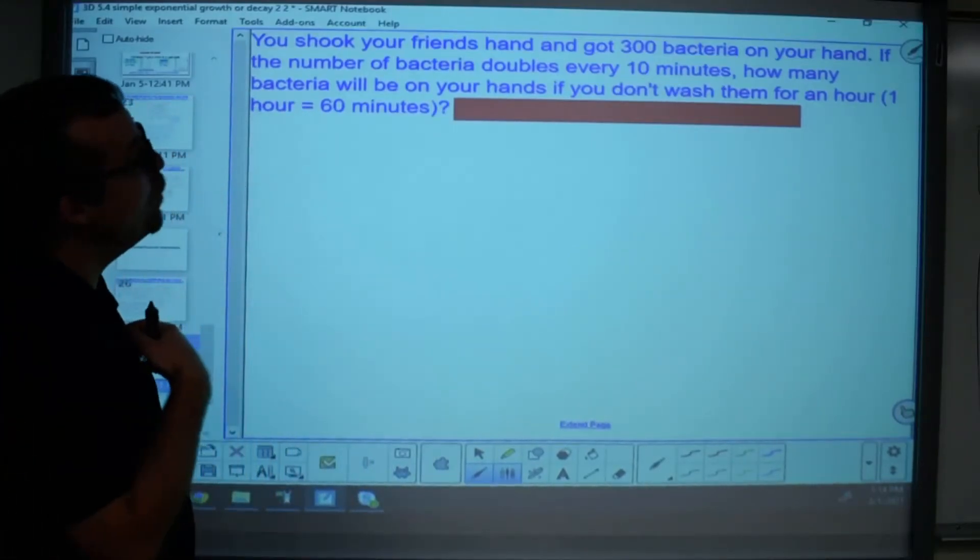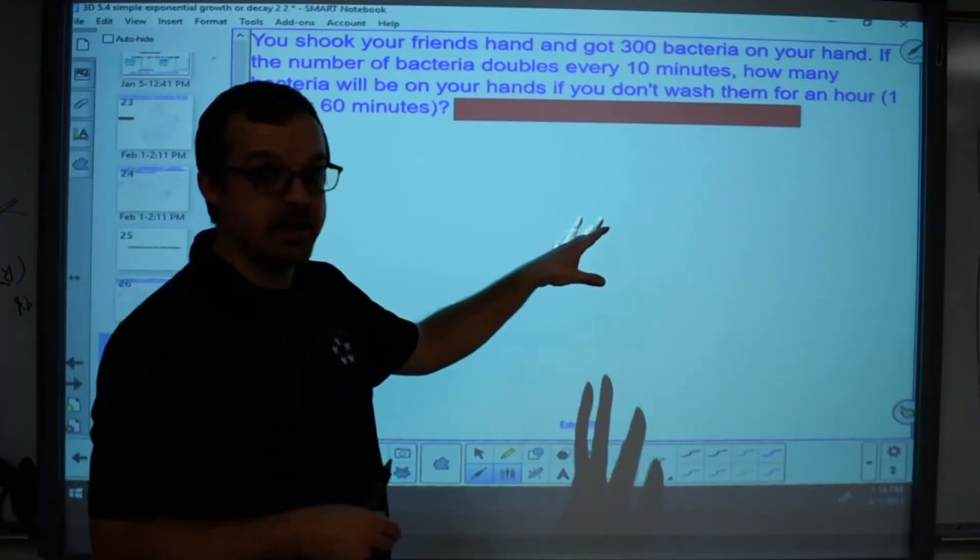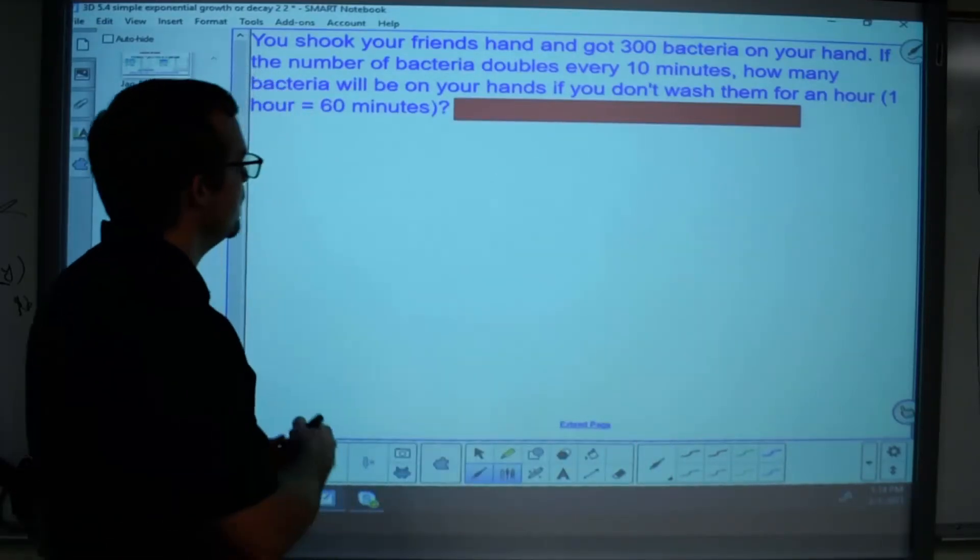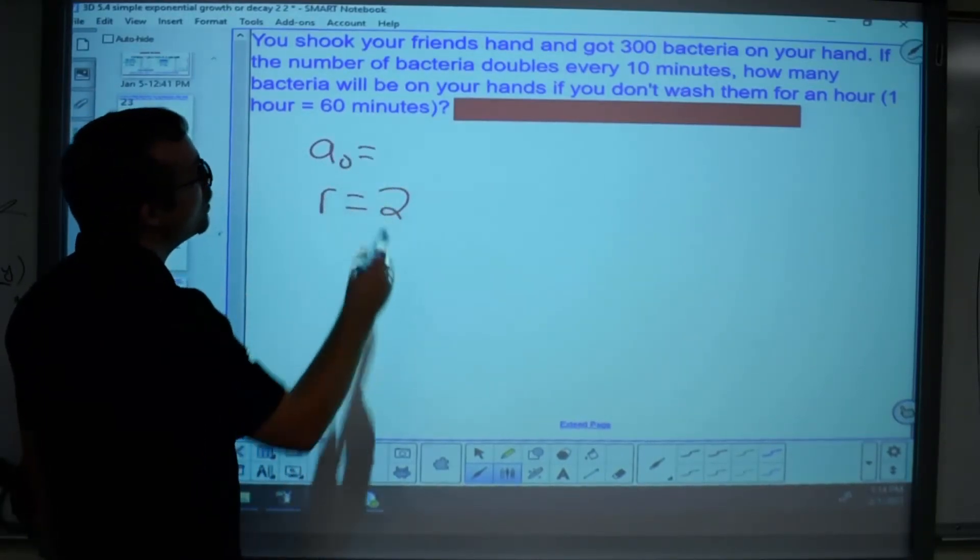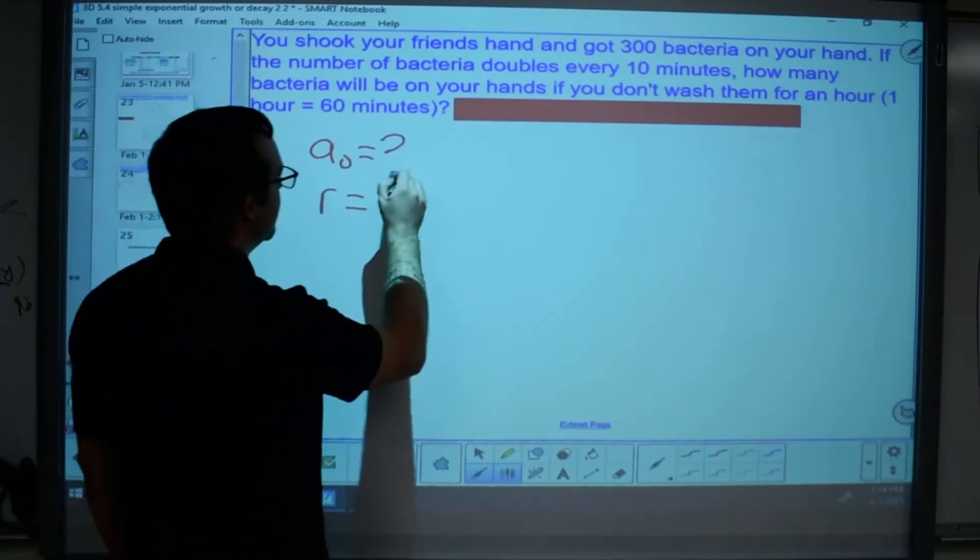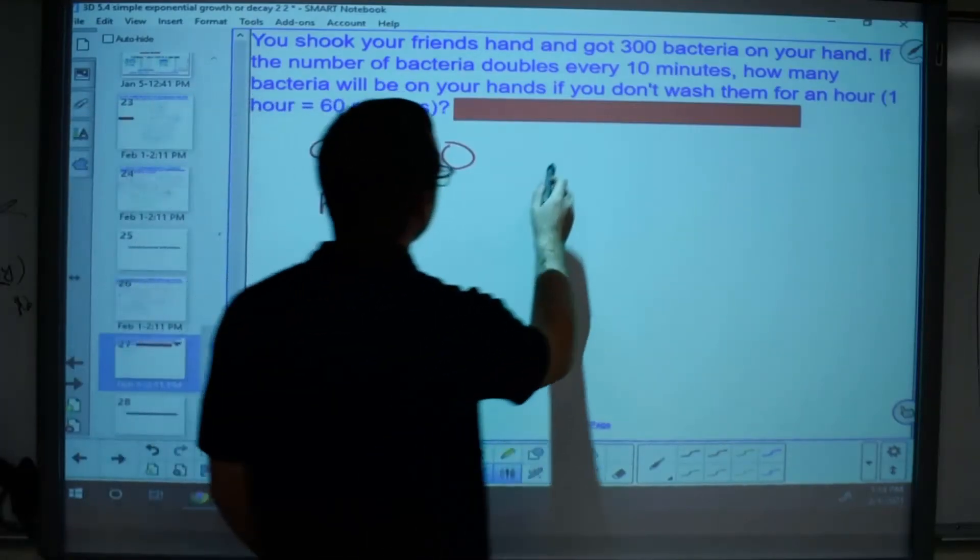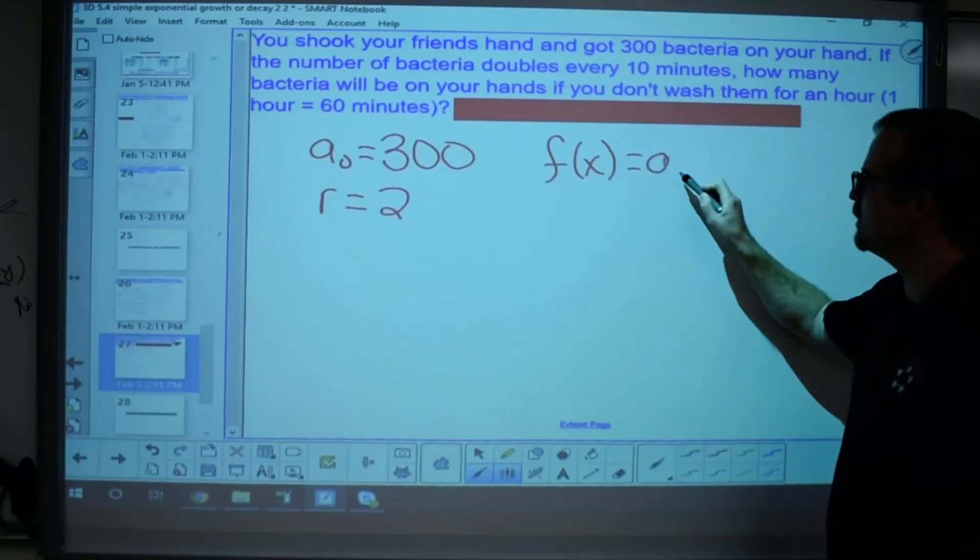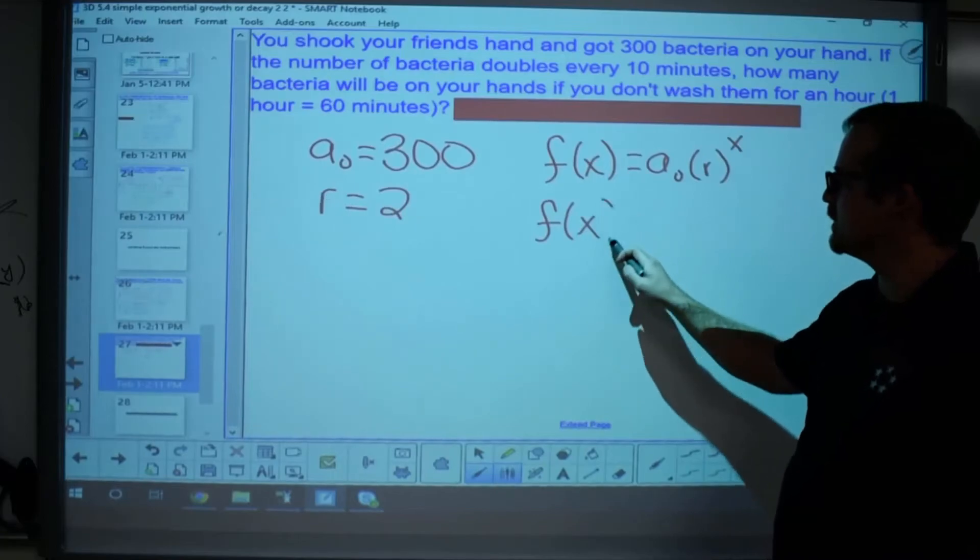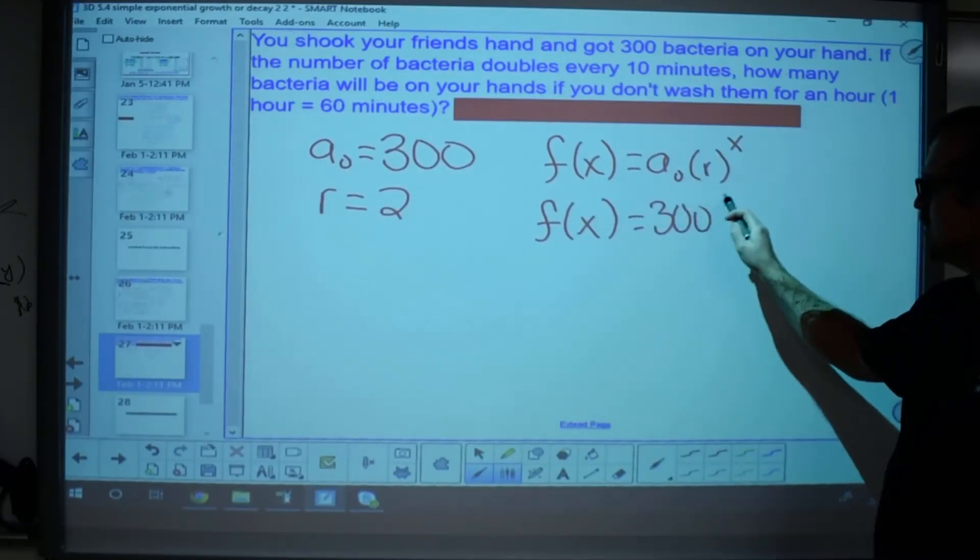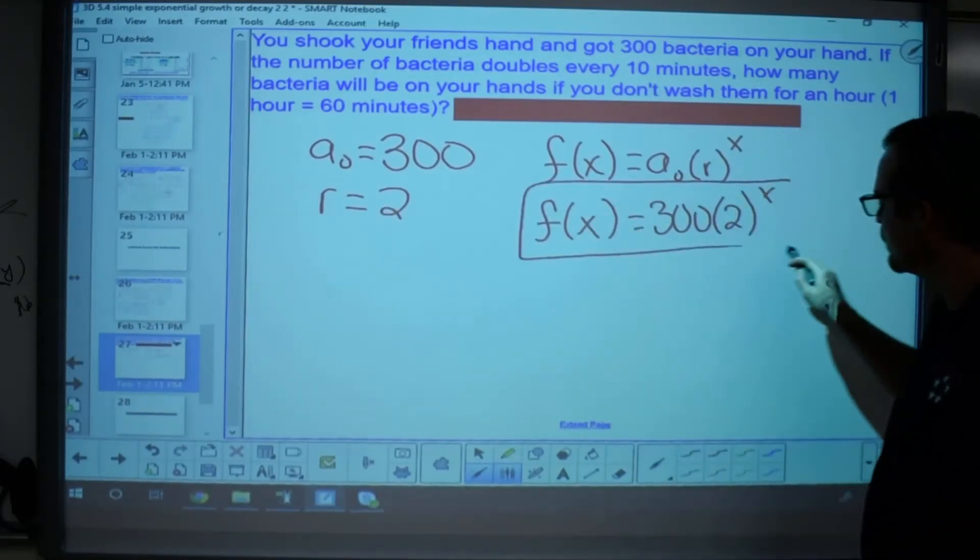I see that it is doubling every 10 minutes, which means the bacteria will start at 300 and then will go up to 600 and then 600 will double again, right, to 1200. So it sounds like the ratio, because we're multiplying, the ratio is going to be two. The initial amount is going to be 300 bacteria on your hand. Let's use that information to write our function. Remember f of x for exponential equations is your initial amount times r to the power of x. Let's begin the substitution process. Your initial amount is 300 bacteria. Your common ratio is two because you are doubling each time. There is your function.